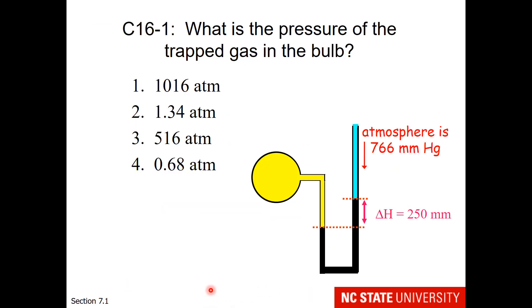So here is your question. What is the pressure of the trapped gas in the bulb? You notice I have placed the bulb on the opposite side, so you can't just go with left side minus right side. First, you need to decide should I use 766 plus 250, which is the difference, or minus 250.